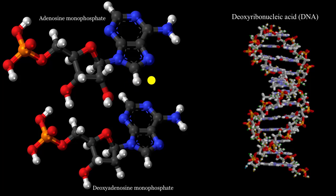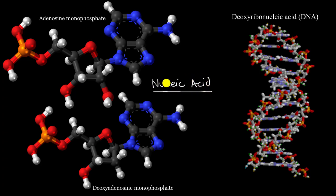We are now going to talk about what is perhaps the most important macromolecule in life, and that is known as nucleic acid. Where does that name come from? Scientists first observed this in the nucleus of cells, and so that's where you get the nucleic part, and it has some acidic properties, and so that's where you get the acid part.